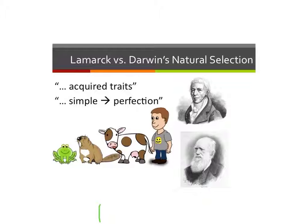Instead, Darwin thought that we all have a common ancestor, and throughout time these ancestors diverged to give us the variety of species that we see today.